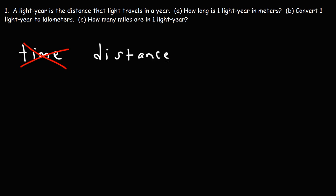A light year is a unit of distance. More specifically, it's a unit of astronomical distance. A light year is the distance that light travels in a year.